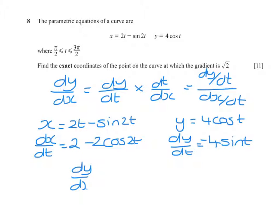So dy/dx equals minus 4 sine t over 2(1 minus cos 2t). And all I've done here is factorize this, which allows me to cancel the 2 and the 4.